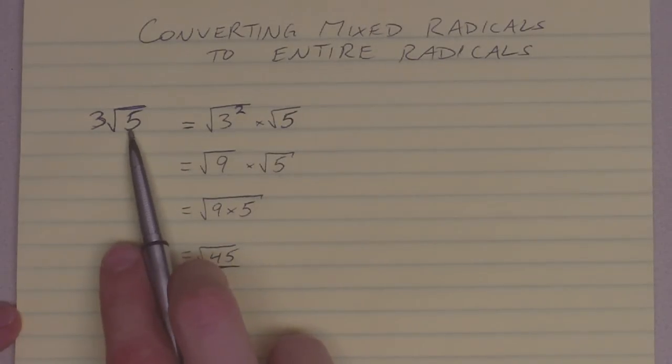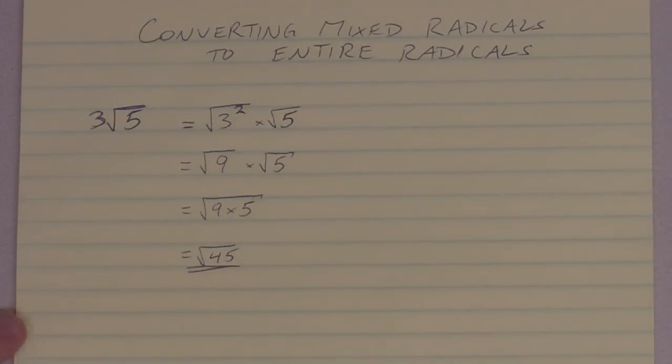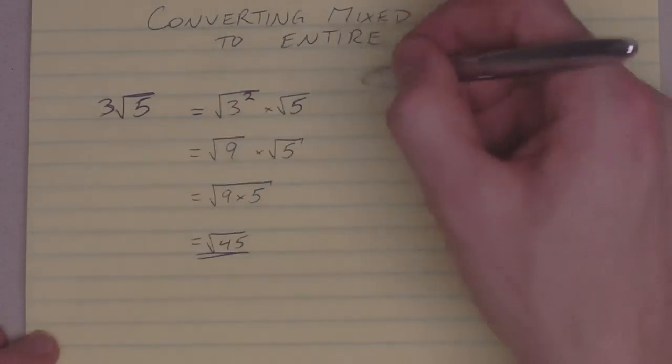And if you check 3 root 5 on your calculator, and if you check square root of 45, you'll find that numerically they are the same. Let's try one more here.